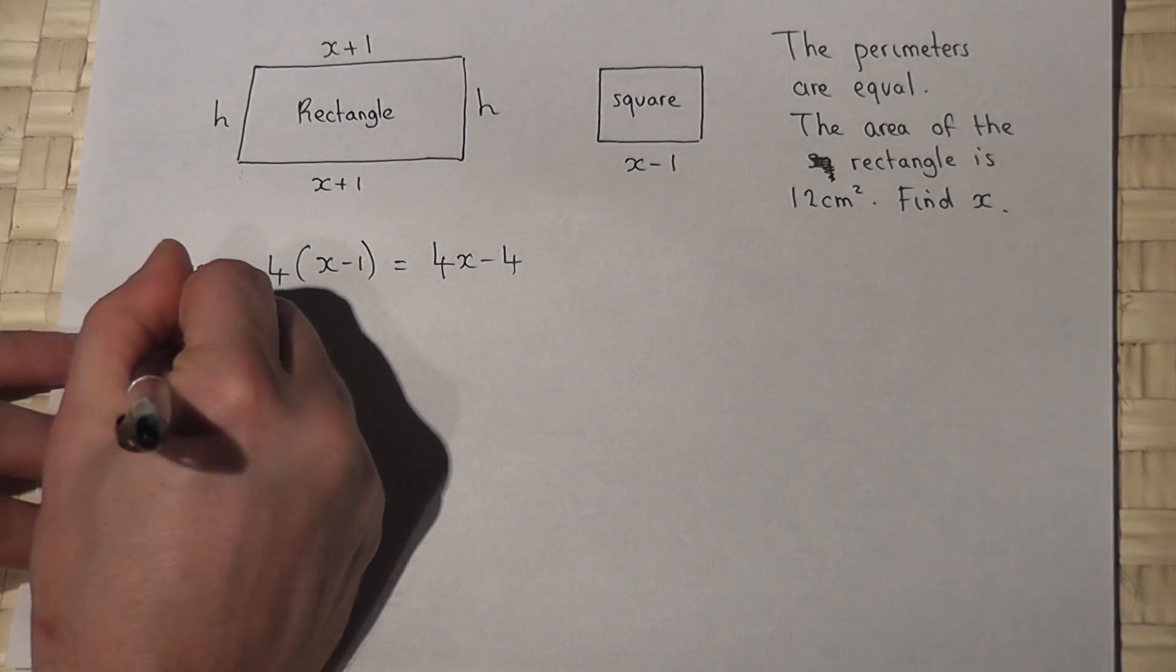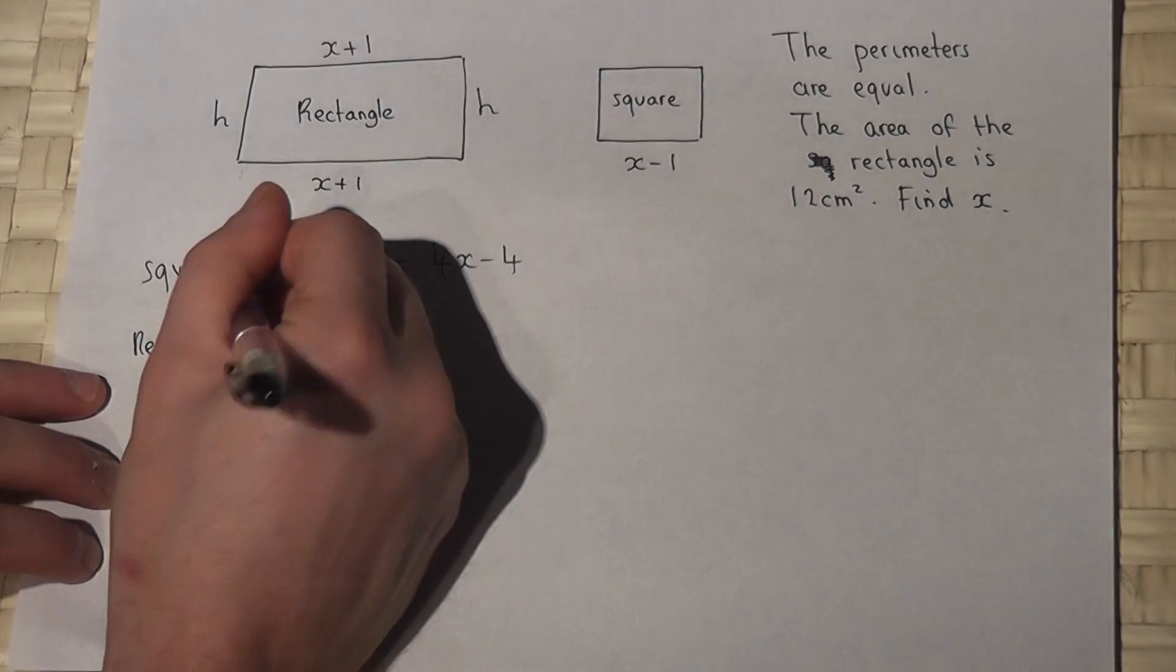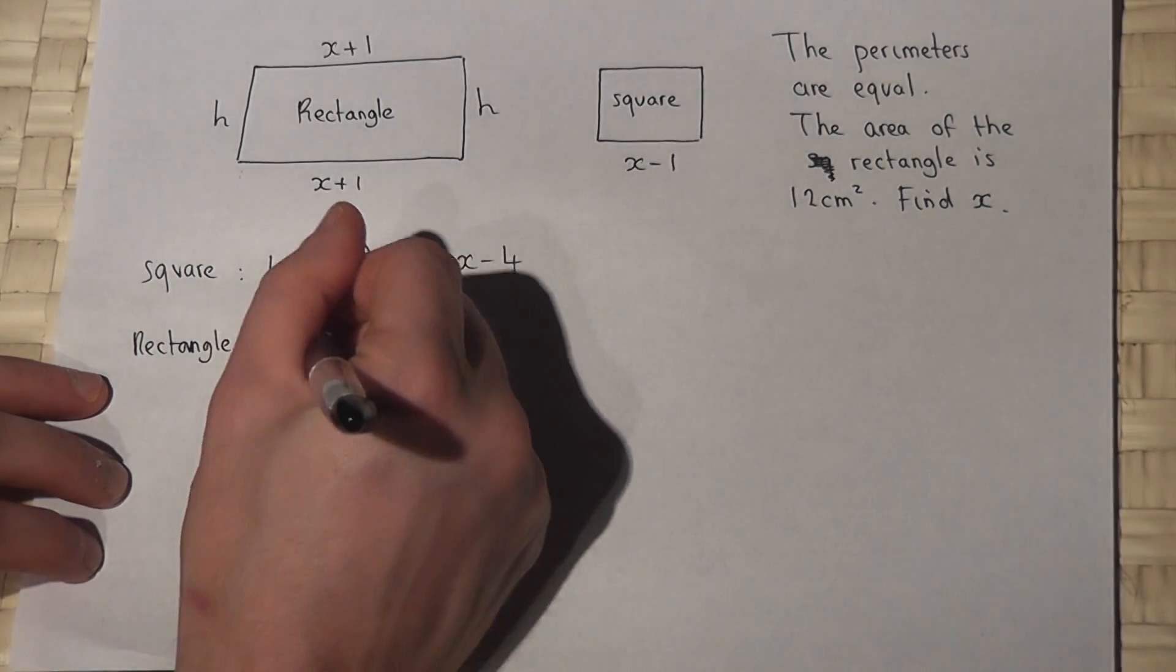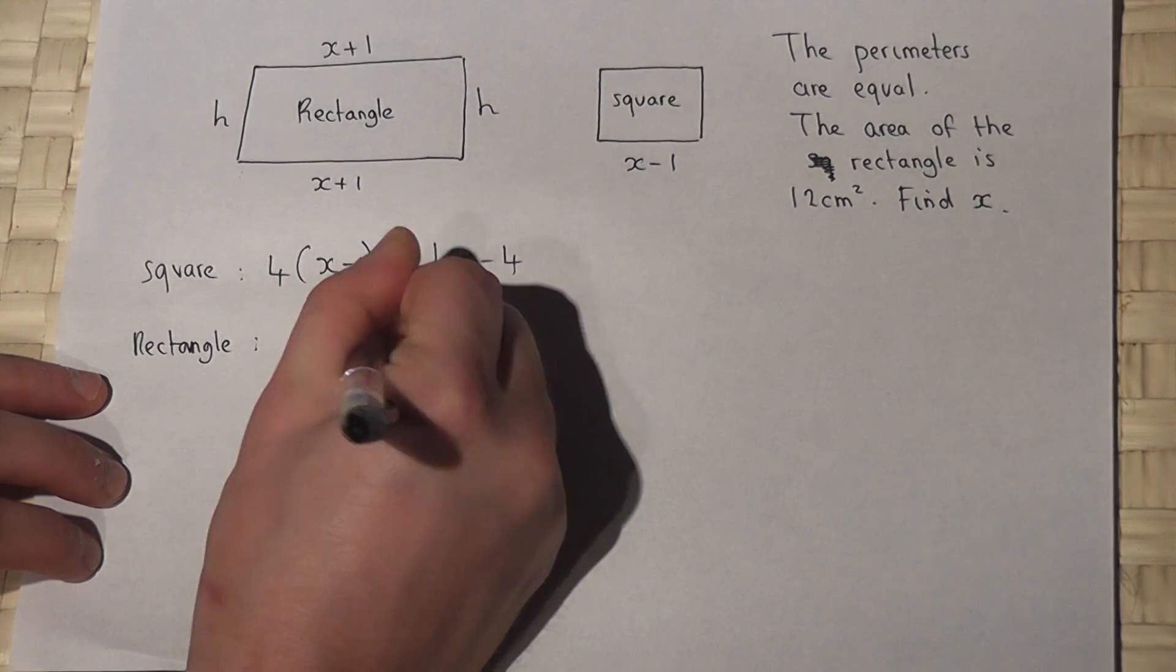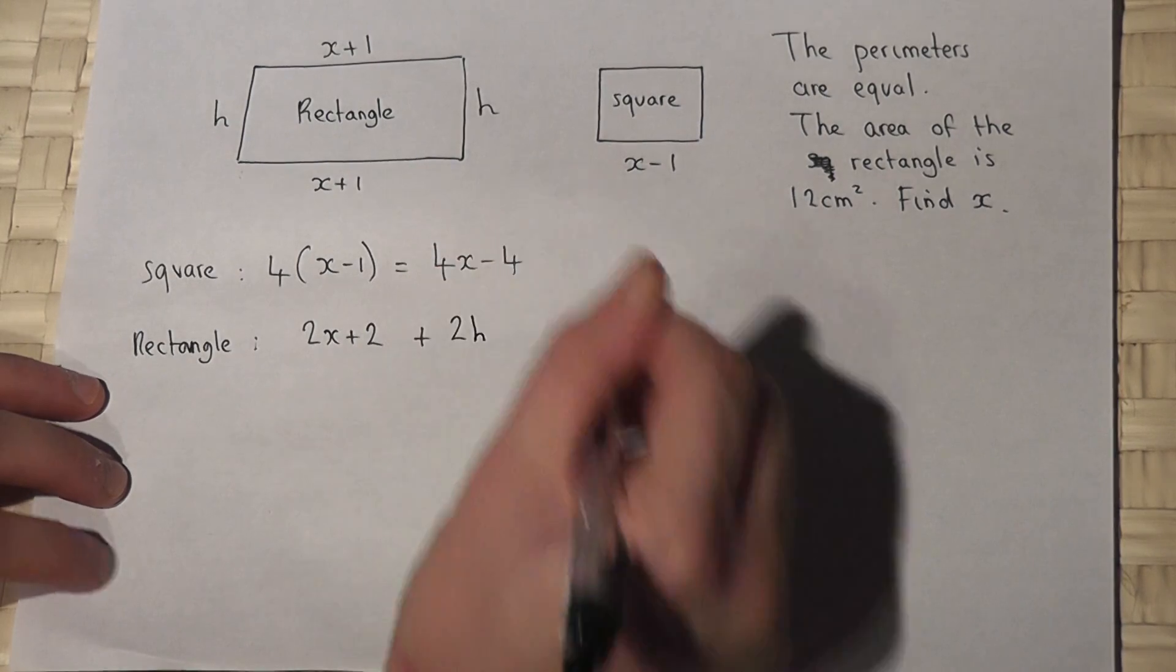So the rectangle has a perimeter of 2 lots of x plus 1, so 2x plus 2, plus 2 lots of the height, so plus 2h.